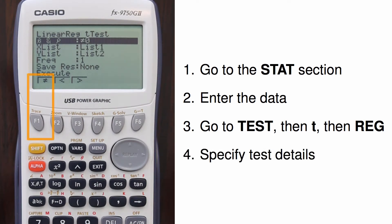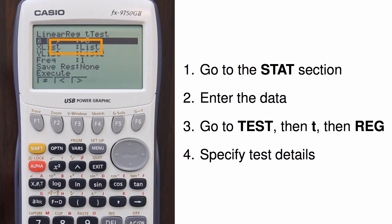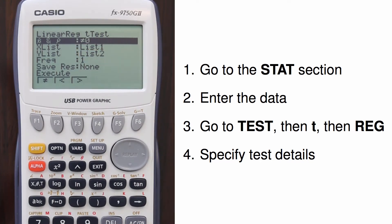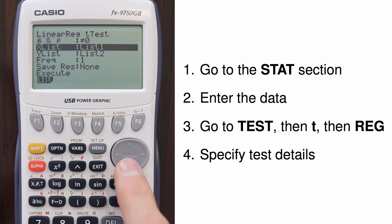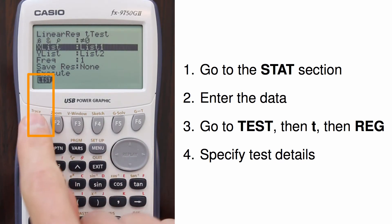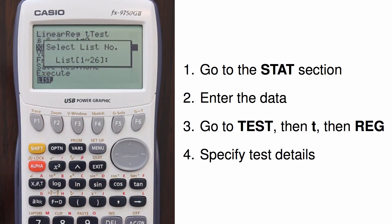Now I need to specify the alternative hypothesis. Since I want to run a two-sided test, I'll use not equals, which is already selected. Next, I specify the lists where the data are located. I prefer to always store my data in lists 1 and 2, and that's again where I've stored these. But had I needed to change the list, I would have navigated down to the list, then hit F1 and entered the number. The frequency value should remain at 1.